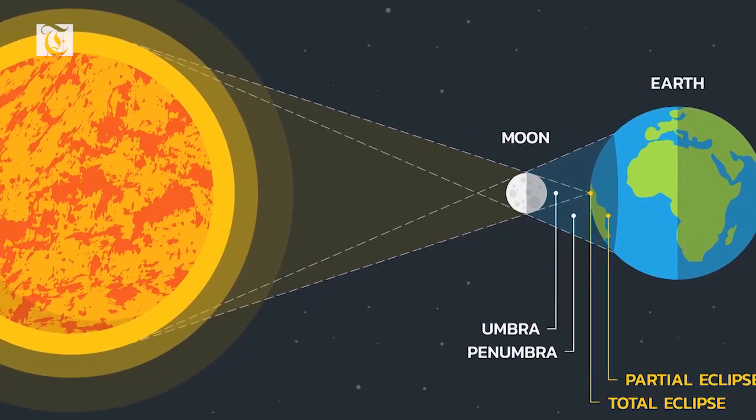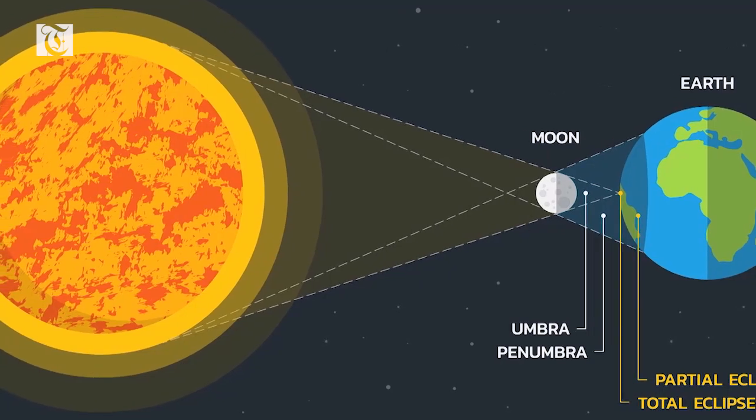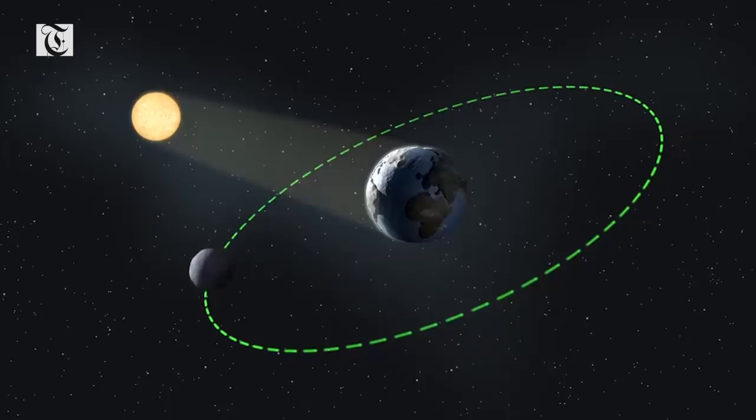How accurate are the predictions of solar eclipses? Eclipse times are calculated mathematically. Factors like the size of the Earth, the Sun and the Moon, as well as their movements in relation to one another, are taken into account. The result will tell you when an eclipse starts, reaches its maximum and ends at a location of your choice.